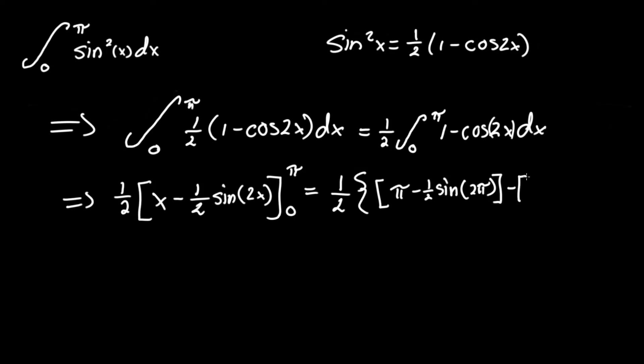And this will be subtracted by 0, plugging now 0 in for x, the lower bound, minus one half sine of 2 times 0, which you know is 0. Now closing these brackets, this will contain our answer, so let's do a little bit more simplification.